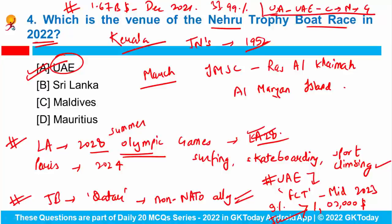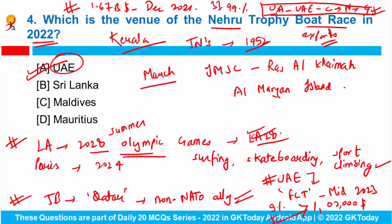The top five export destinations of India's electronic goods were USA first, then UAE, China, Netherlands, and Germany. Can you tell me which product forms a major part of India's electronic goods sector export? Please answer in the comments.